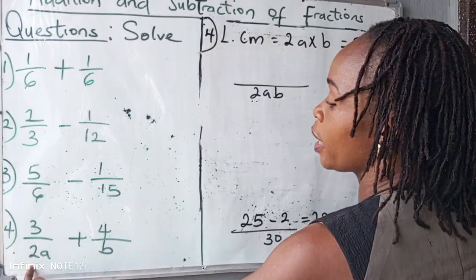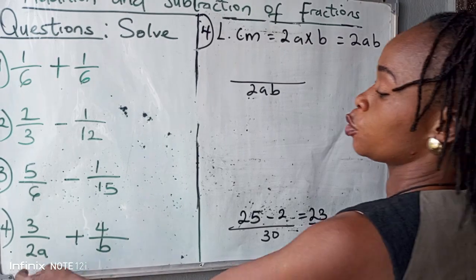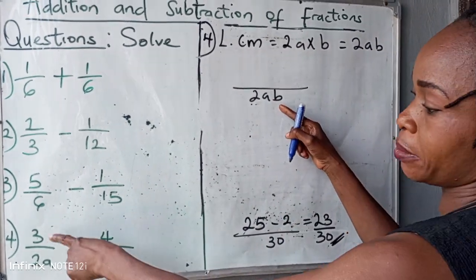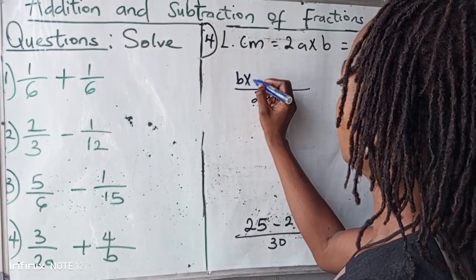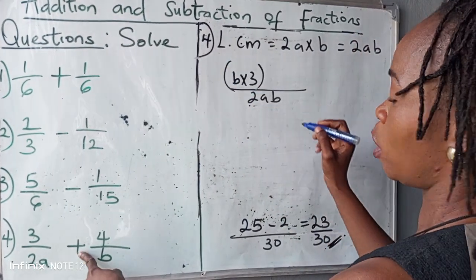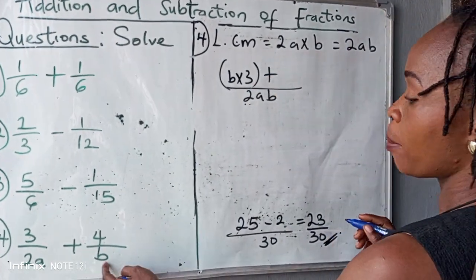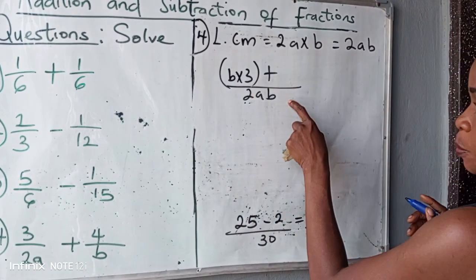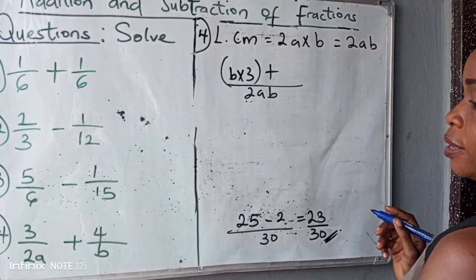Now draw your lines with two A B. Now two A into two A B. Two A we cancel out two A, leaving out B. So B times three. Put it in brackets. Plus how many B in two A B. B we cancel out B, leaving out two A. Two A times four.